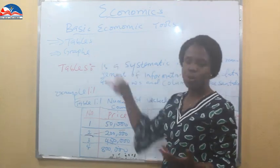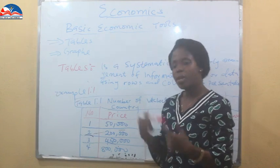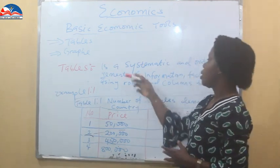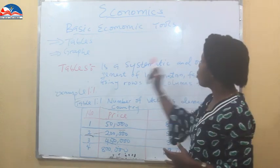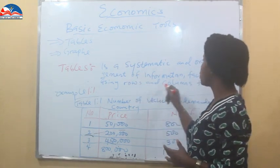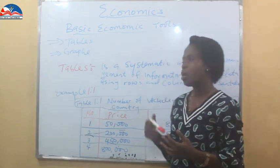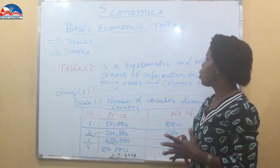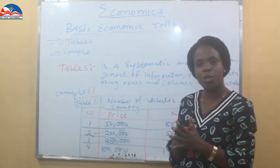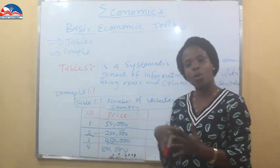Basic economic tools — these are the tools we'll talk about today: tables and graphs. Now let's take the first one: tables. What are tables? A table is a systematic and orderly arrangement of information, facts, or data using rows and columns for presentation. Tables are economic tools used in the systematic arrangement of information using rows and columns.